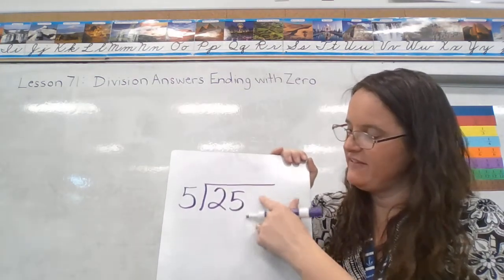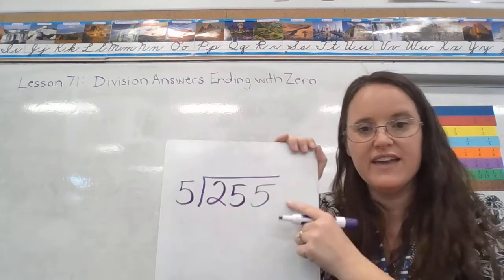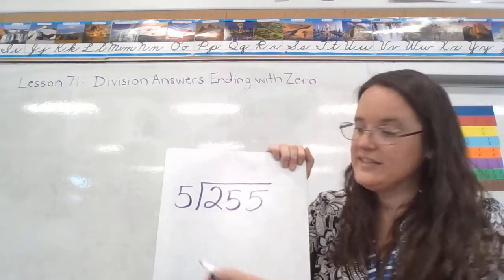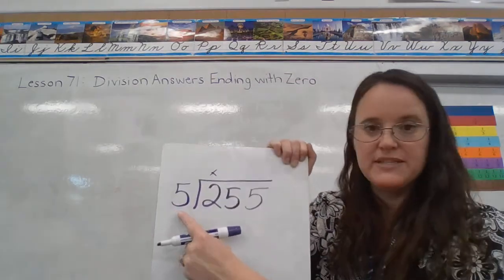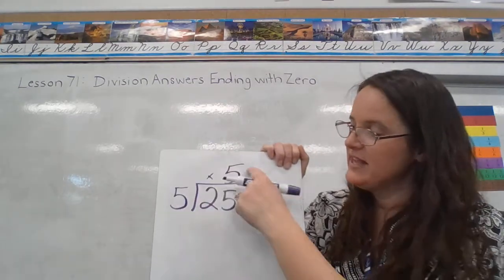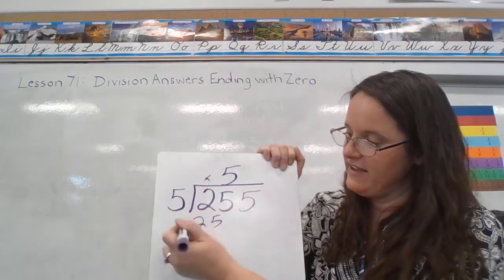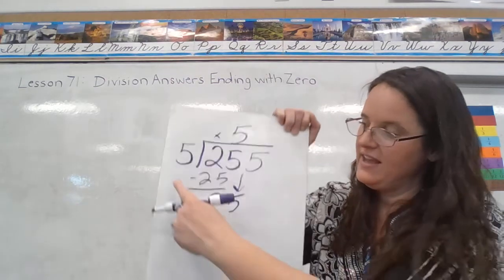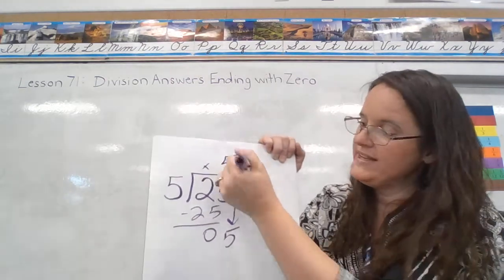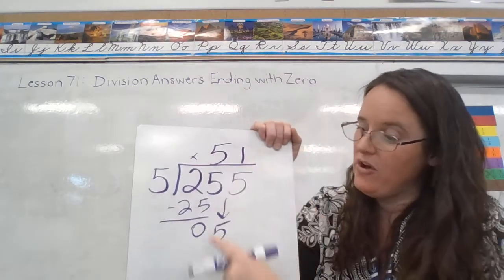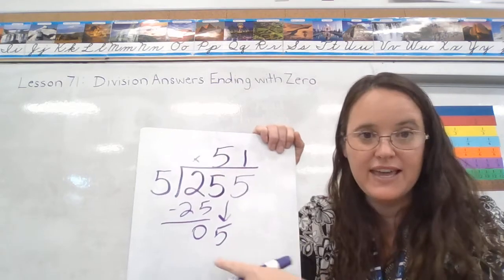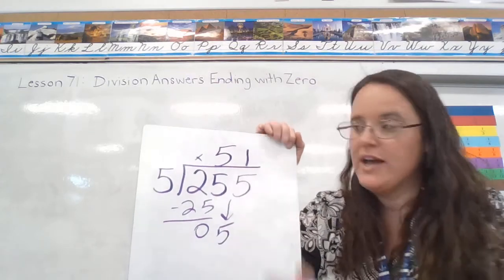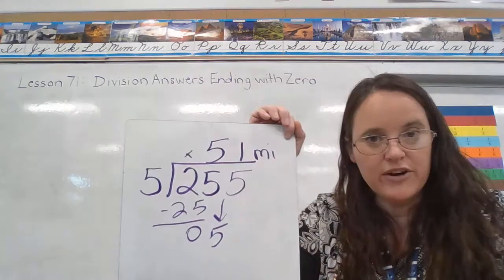I want to change it to a five because 255 is a lot closer to my original number than 250, okay? And then we're going to divide. Five can't go into two. How many times does five go into 25? Five times. Five times five is 25. We get zero, we drop our five. How many times does five go into five? One time, and I don't even have to finish that because I know that it goes exactly one time. If I multiply and subtract, I'm going to end up with no remainder. So about 51 miles each hour is what he traveled.